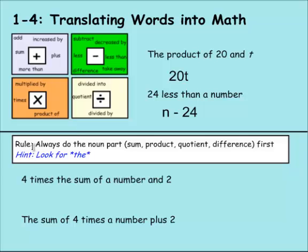Here's a general rule when we're doing these compound ones: do the noun part first. You're going to see sum, product, quotient, difference. These words are nouns, parts of the problem that you need to put together first. The hint is often look for the word 'the.' That usually tells you a noun is coming up. It's not always there, but it often is.